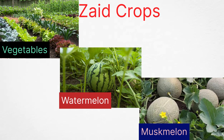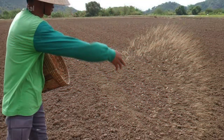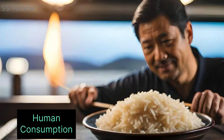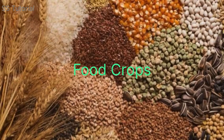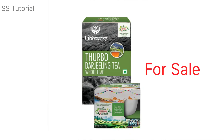On the basis of utility, crops can be divided into two types: food crops and cash crops. The crops that are grown mainly for human consumption are called food crops. Rice, wheat, and corn are all examples of food crops.